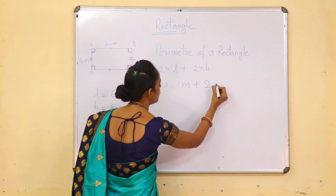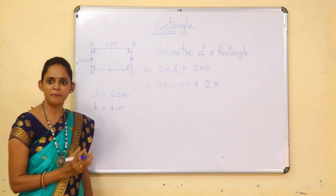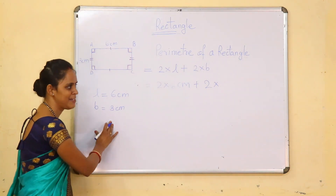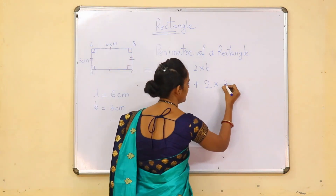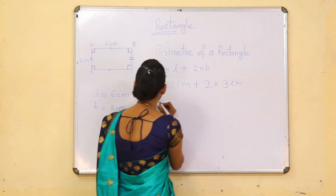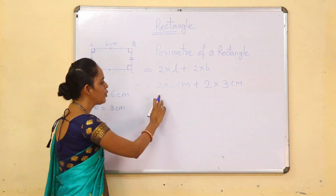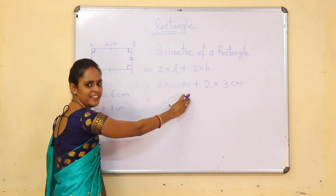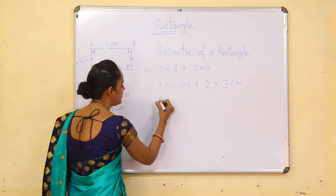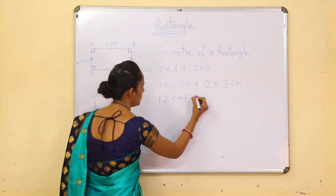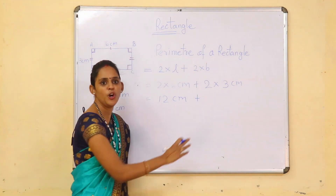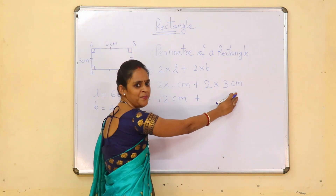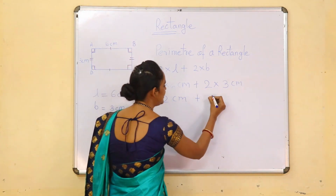Plus 2 into — what is the width of the rectangle? Yes, 3 cm. Very good. Now can you tell me: 2 into 6 cm is equal to how much? Yes, 12 cm. Very good. Plus 2 into 3 cm is equal to? Yes, 6 cm.